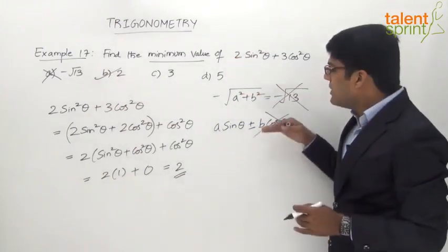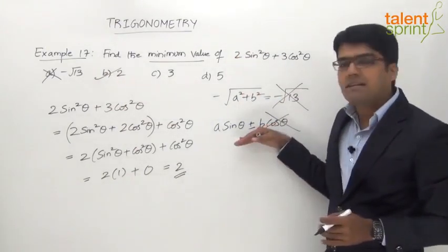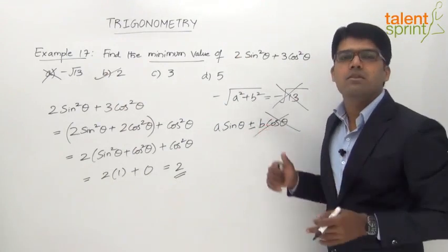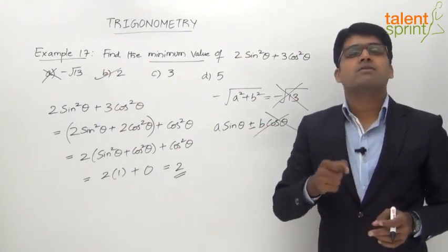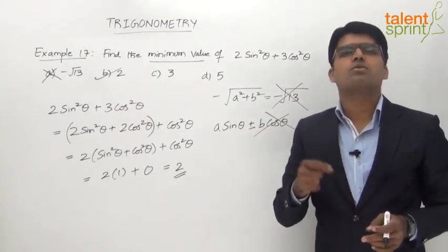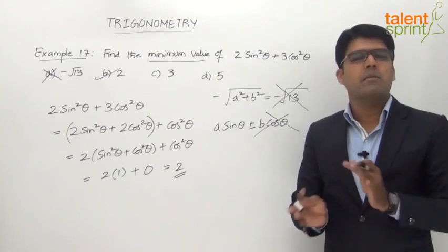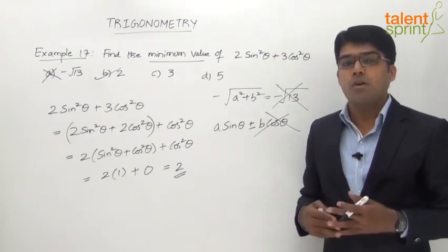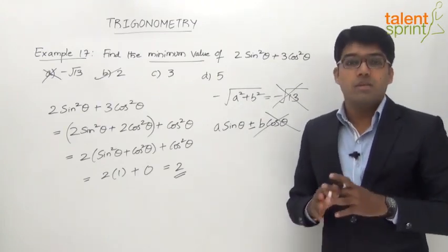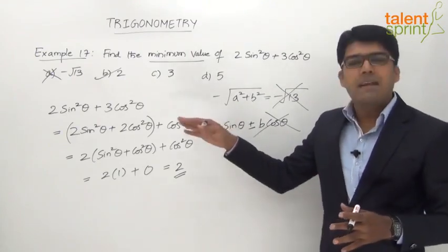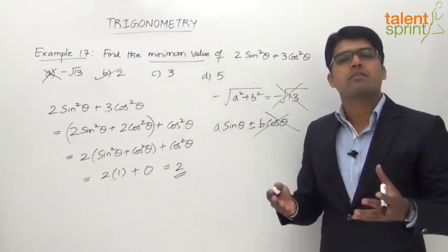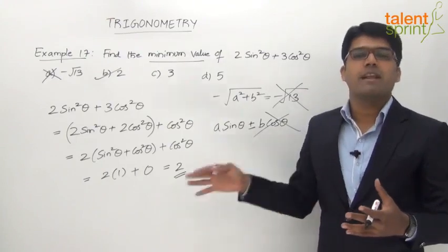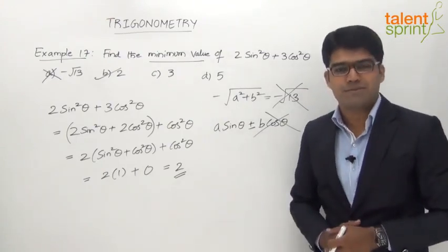As you have seen, only for the standard form a·sinθ ± b·cosθ can we use ±√(a² + b²) to get the minimum and maximum values respectively. But if the equation is in any other form, we have to carefully expand it using a trigonometric identity or convert it into the right form to arrive at the minimum or maximum values.